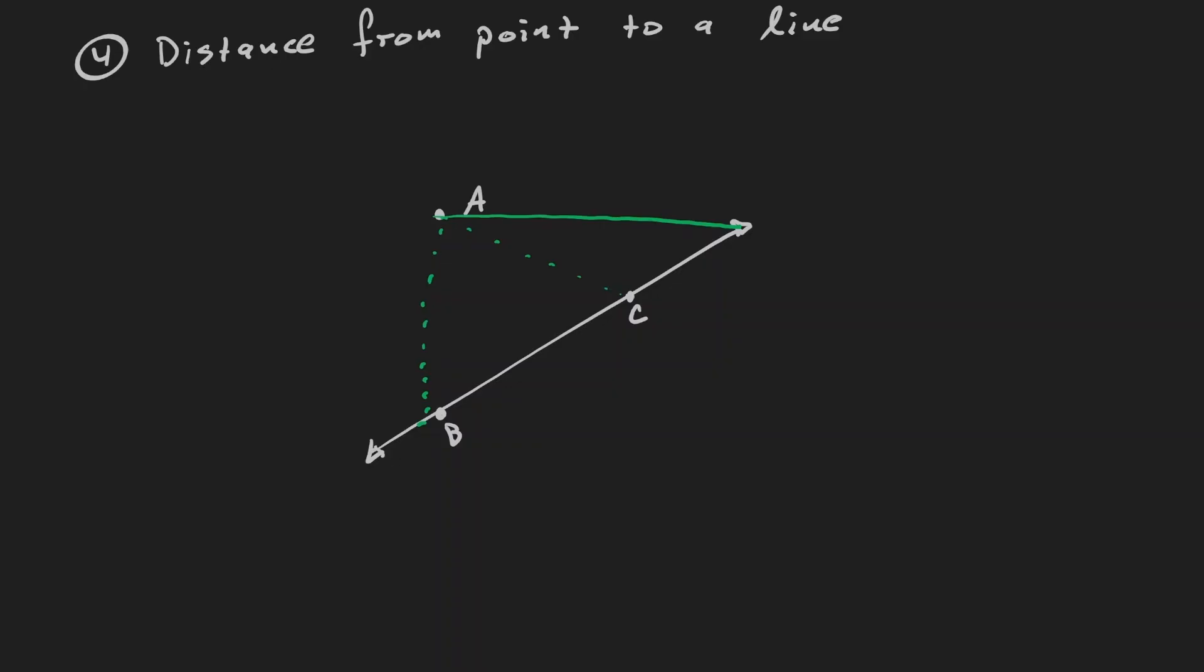So in reality, which line do we take in consideration when we want to find out the distance from a point to a line? Well, the answer is neither. Because the distance from a point to a line is always a perpendicular line. If I really want to find out the distance from a point to a line, I need to find out a perpendicular line that starts from A and is perpendicular to the line in here.